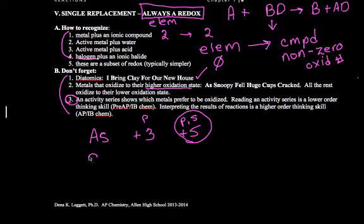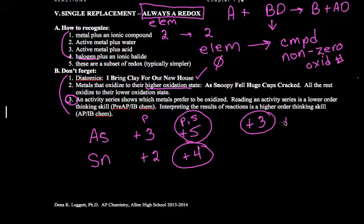And what this phrase says is pick the plus five. For tin, which can be plus two or plus four, pick the plus four. Iron would be plus three as opposed to plus two. Copper would be plus two as opposed to plus one, and so forth. Reference back to your atom unit and you'll see those common oxidation numbers. These all pick their higher.